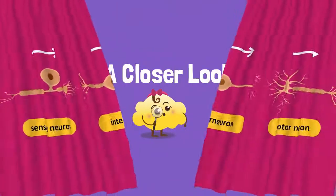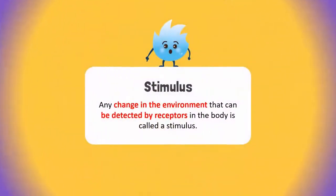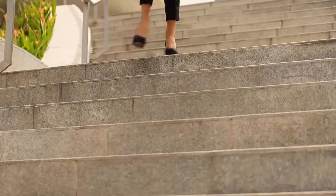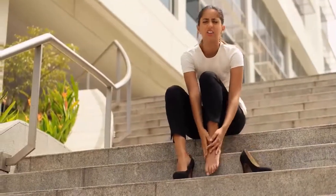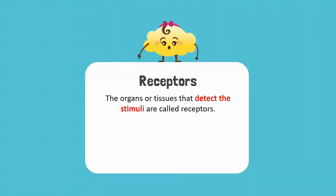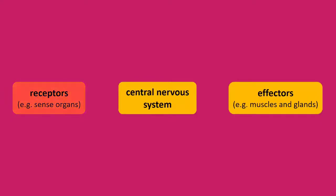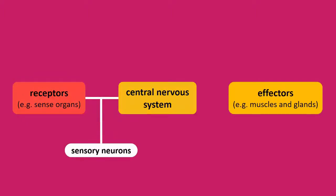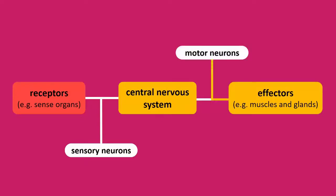Let's take a closer look. Any change in the environment that can be detected by receptors in the body is called a stimulus. For example, when you injure your foot while walking, a stimulus was detected. The organs or tissues that detect the stimuli are called receptors. In our example, the skin on the foot is the receptor. When you get an injury, the skin initiates a nerve impulse which is carried by sensory neurons to the central nervous system. The central nervous system processes the message and transmits the nerve impulses to motor neurons. The motor neurons carry the nerve impulses to the part of the body that produces responses. Such parts are called effectors. Muscles and glands in the body act as the effector.